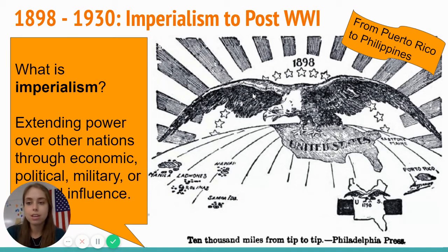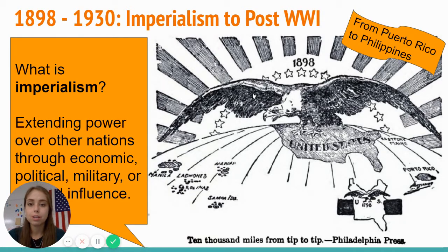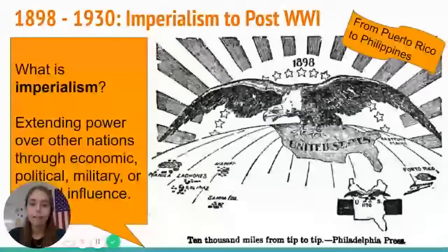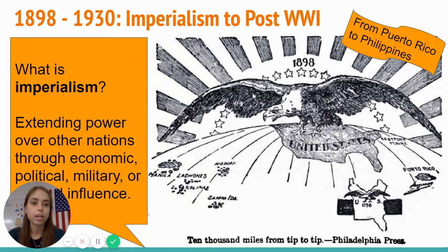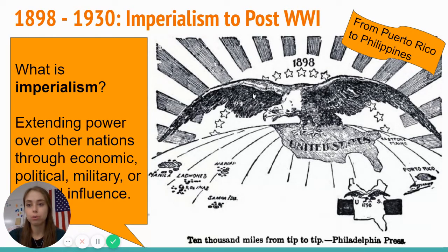In the very late 1800s into the first few decades of the 1900s, we see the U.S. start to participate in imperialism. The picture here was a pretty common image to see — the U.S. bald eagle spreading its wings all across the globe, showing the U.S. starting to exert power outside of our own borders.